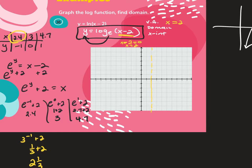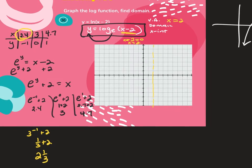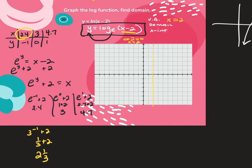If you're approximating, you approximate e as 3. If you don't have a calculator, you'd have to do that. We have calculators, so we can do e to the negative 1 exactly. But without one, we'd say e is about 3, and 3 to the negative 1 is one-third.